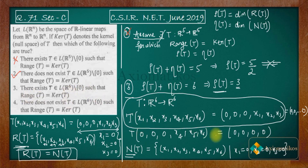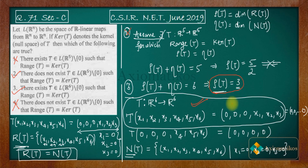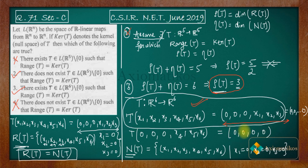We have found a non-zero transformation for which range space and null space are exactly equal, so option 3 is true. Option 4, which states that no such T exists in L(R⁶) minus {0}, is therefore incorrect. This is how we solve this problem. If you have any questions, ask in the comment section, or join our WhatsApp and Telegram groups — links are in the description. Thank you.